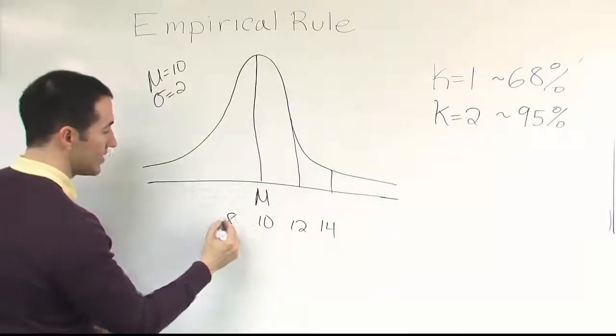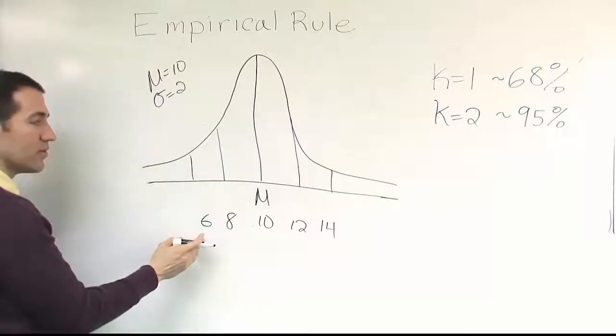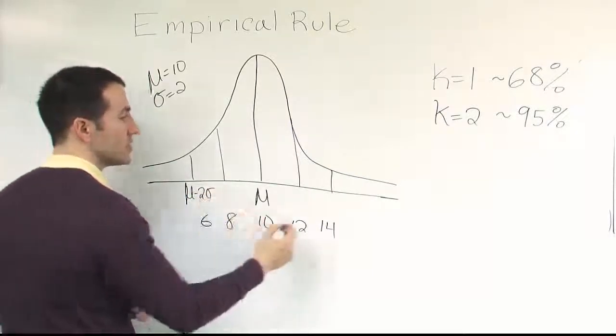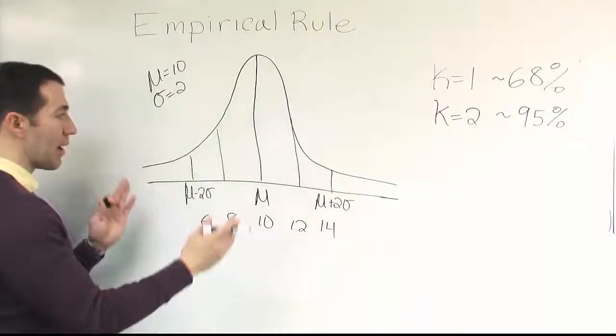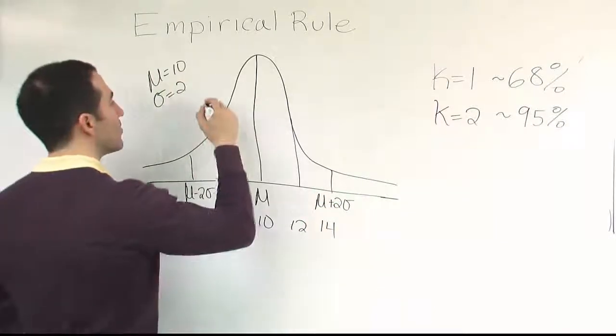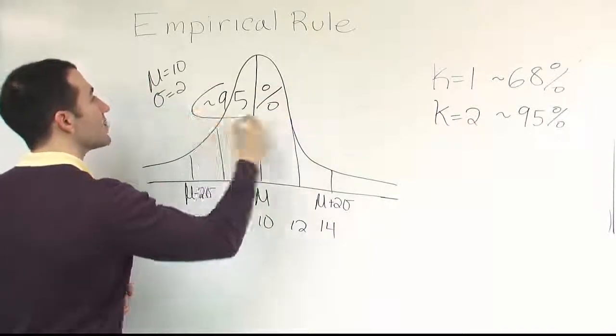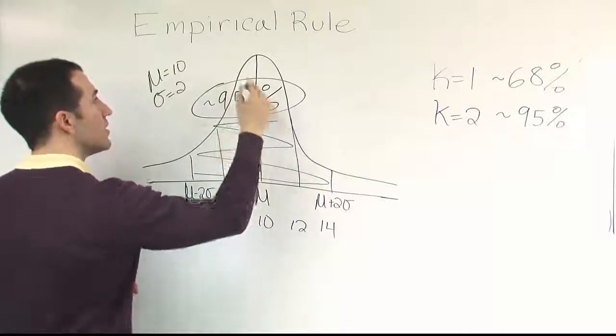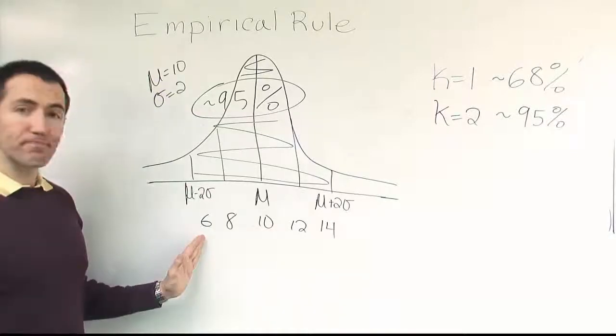If you go back to 8 and then to 6, you now have 2 standard deviations below the mean. That whole span, the mean minus 2 standard deviations to the mean plus 2 standard deviations, will capture approximately 95% of the data. That's a very powerful bit of information.